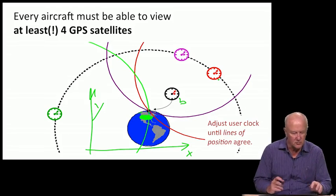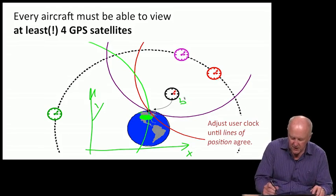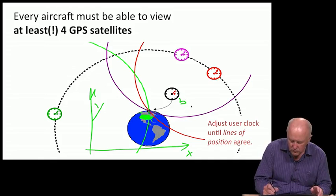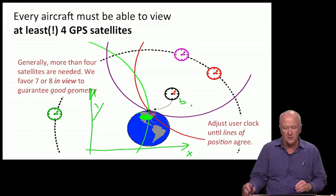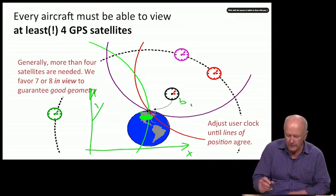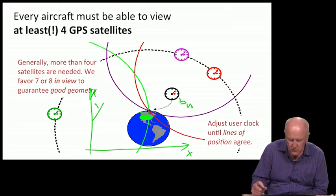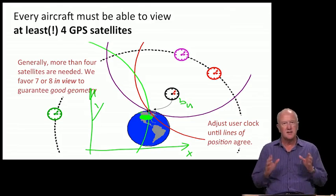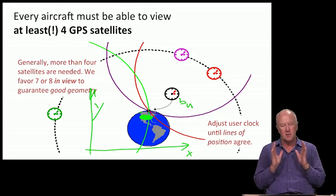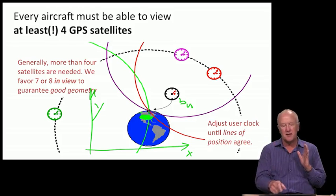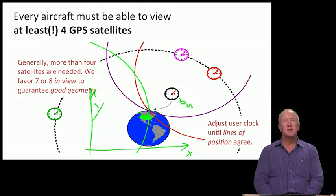When that nice event occurs, the receiver knows that not only has it solved for its location at the intersection of the three lines of position, but it has also solved for the user clock offset relative to GPS master time.